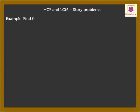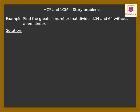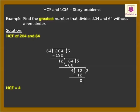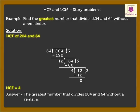Example: Find the greatest number that divides 204 and 64 without a remainder. Here we have to find the greatest number that divides two numbers, which means we need to find the H.C.F. of 204 and 64. Thus, H.C.F. is equal to 4. So, the greatest number that divides 204 and 64 without a remainder is 4.